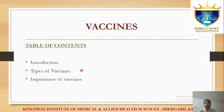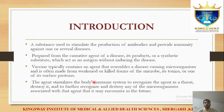We will cover different types of vaccines, distinguish between them, and discuss what is important about them. Vaccines are a substance used to stimulate the production of antibodies and provide immunity against one or several diseases.